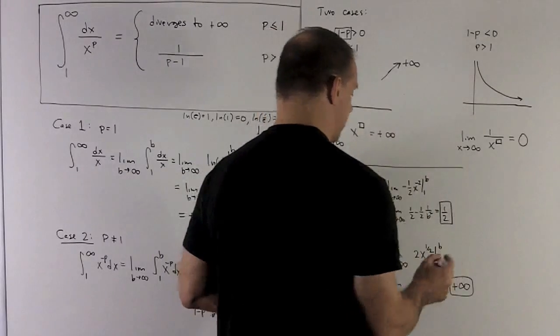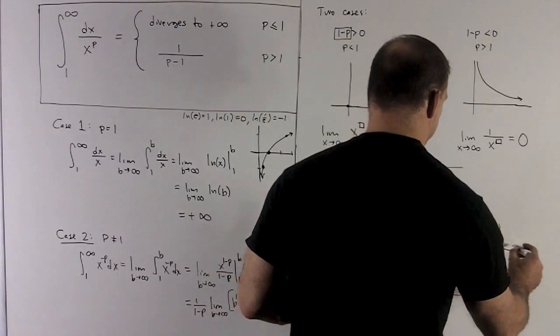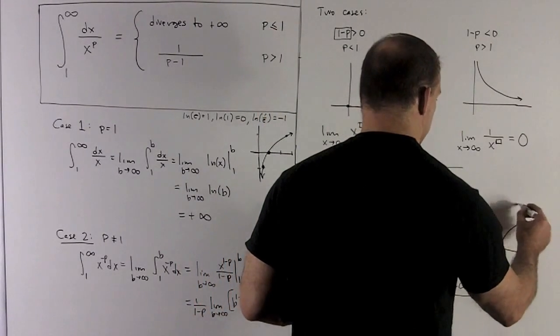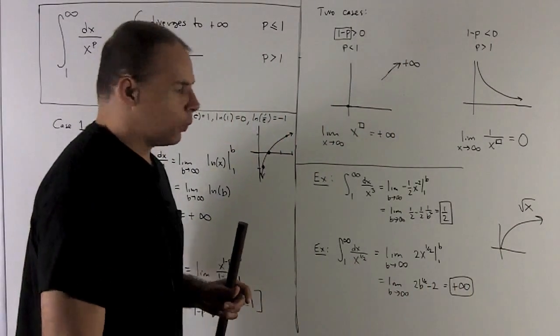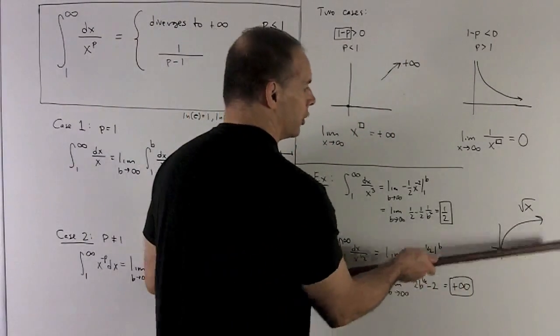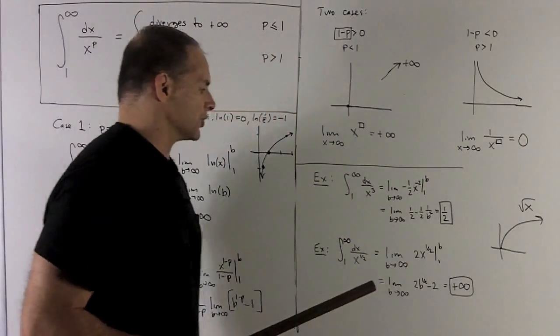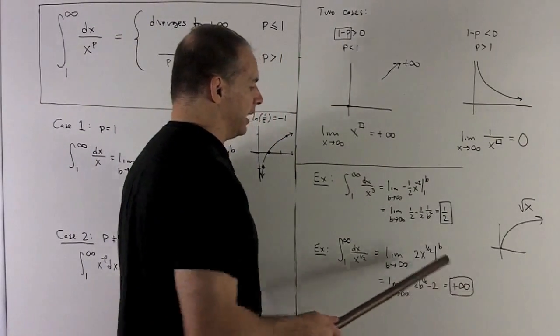Well remember, all right, we go this, but we actually know the graph of x to the 1 half. That looks like this. So when I go off to infinity, the y values are definitely going up to infinity also.